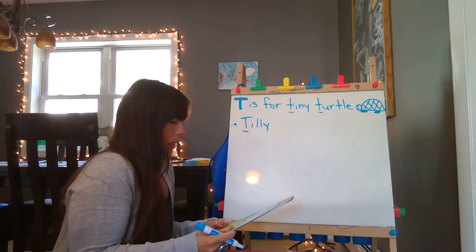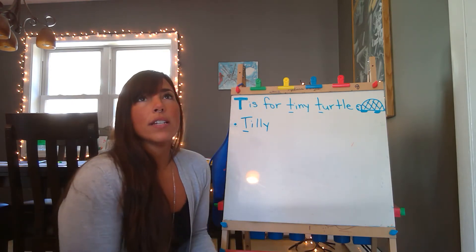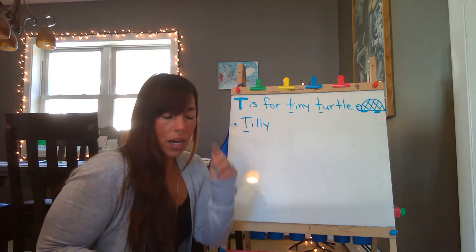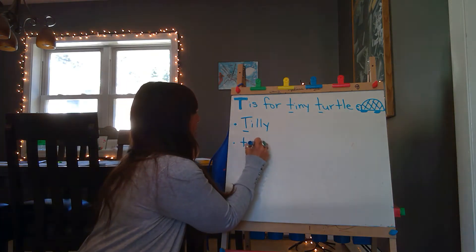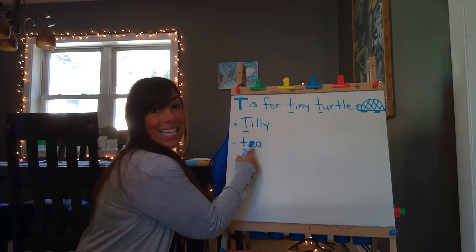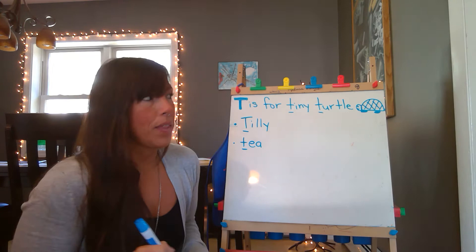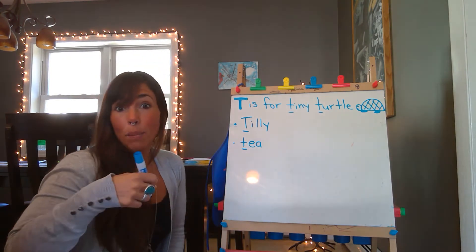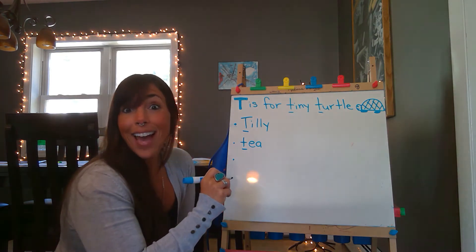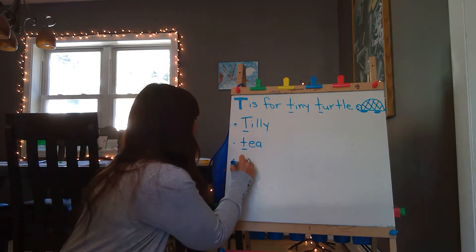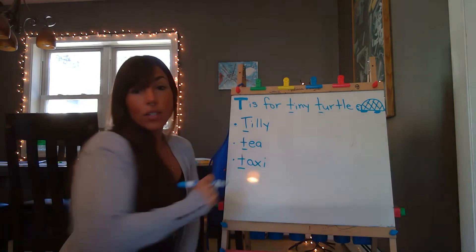T is for Tilly — she's a turtle. What did she take to get to the T-T party? Do you remember? It's a type of car that you can call and someone will come and pick you up. How about taxi? She took a taxi to get to the T-T party.